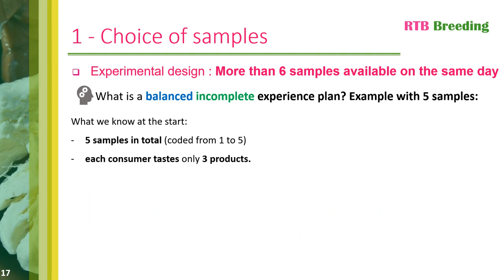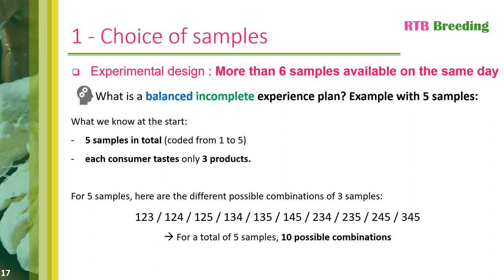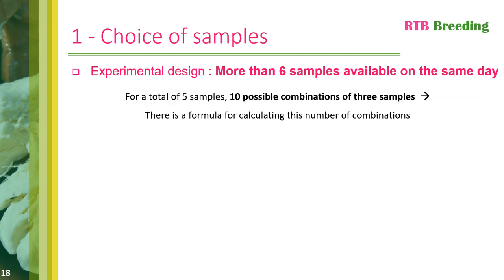To help you understand what a balanced incomplete experience plan is, I'm going to show you an example with five samples — though I would like to remind you that this type of experience plan should only be used when you have more than six samples. In our example, we want to analyze five samples and each consumer will only taste three samples. We then look for all possible combinations of three samples out of the five. As you can see, there are ten possible combinations of three samples out of five.